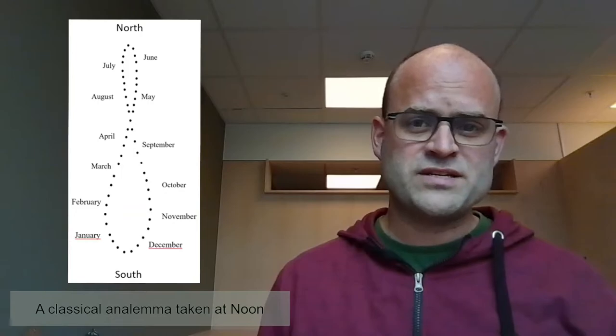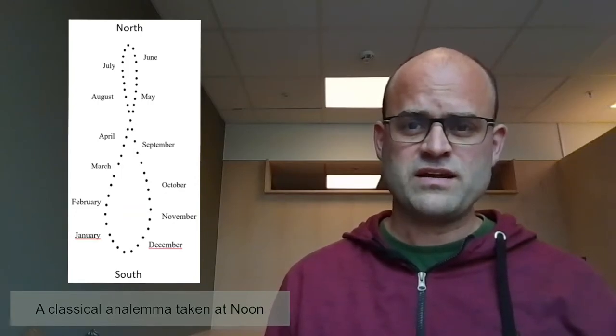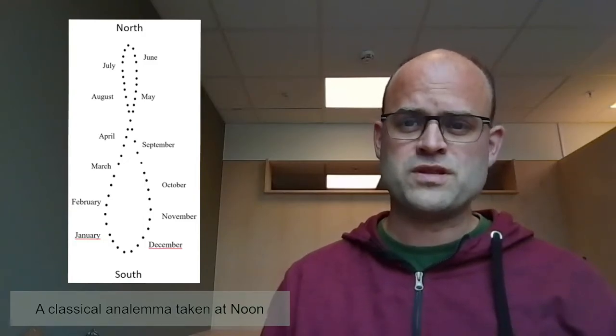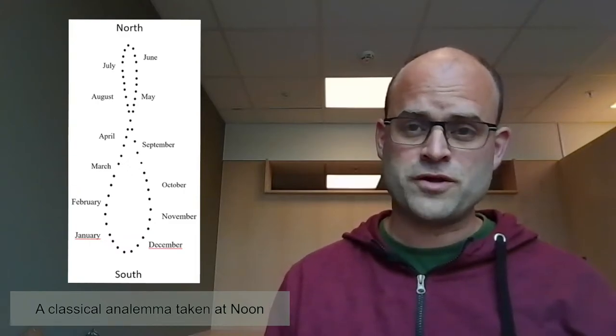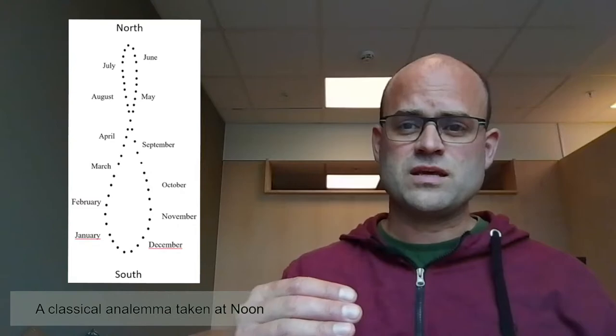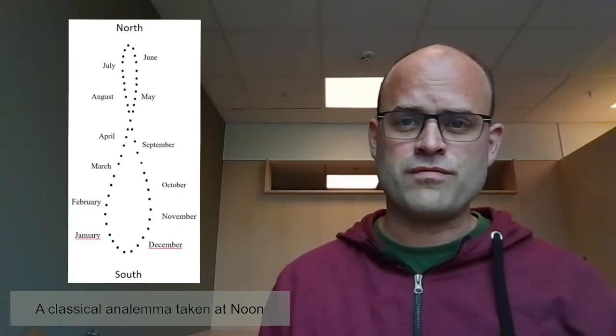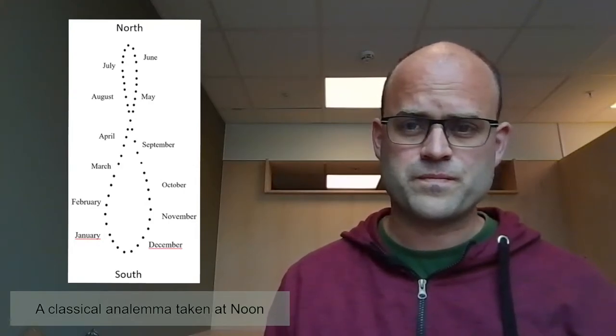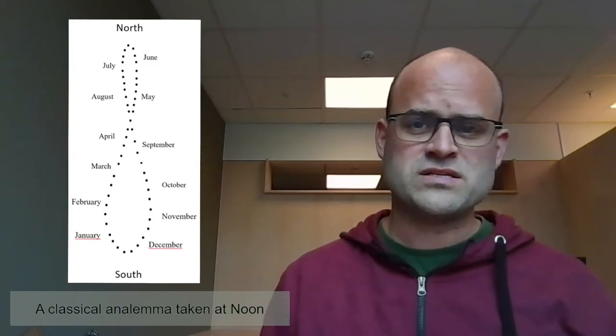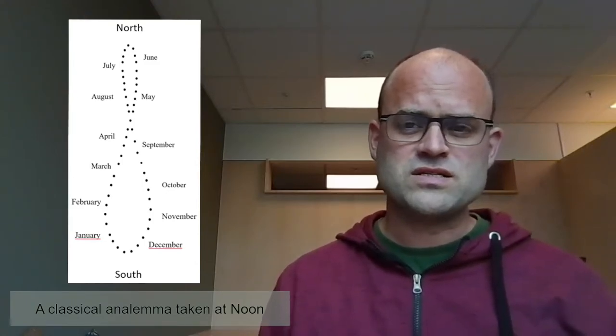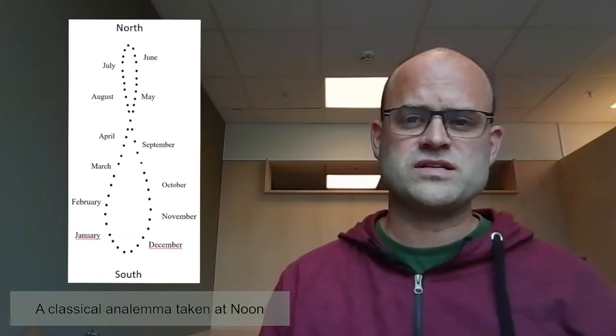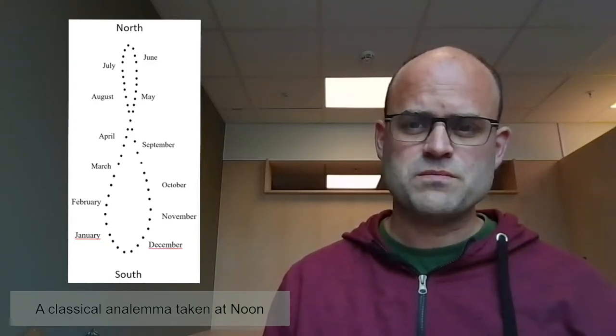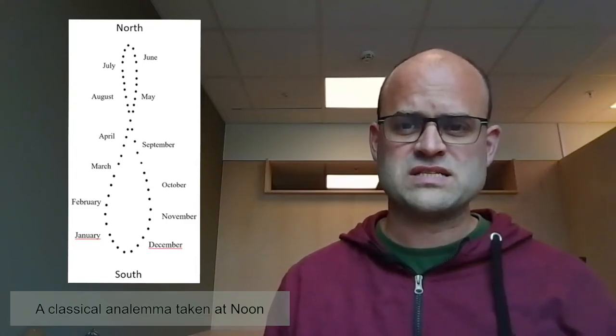And just a couple of weeks later when we observe the Sun's position again, the dot happens to be slightly to the left and further down. So the up and down motion is very well known from before. It's the motion of the solar height due to the tilt in the rotational axis of the Earth. But in addition to that you have a sideways motion. For some reason the Sun doesn't move vertically in this height difference.